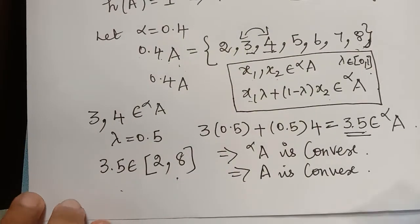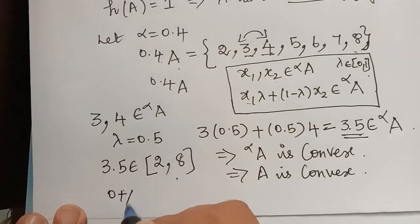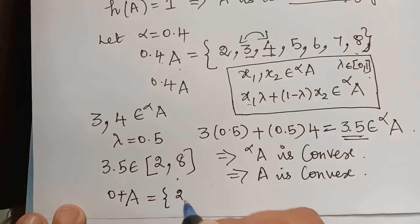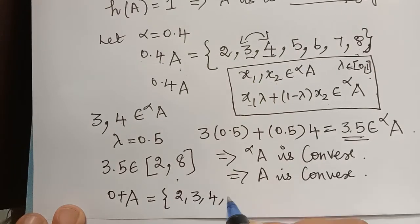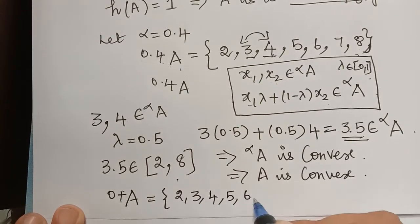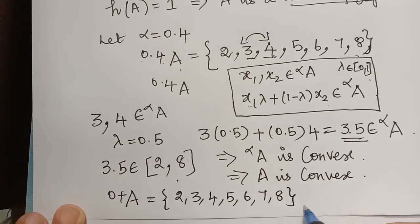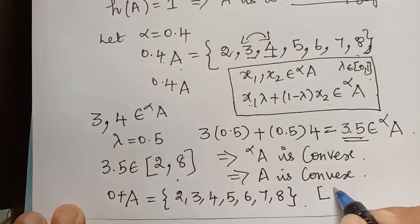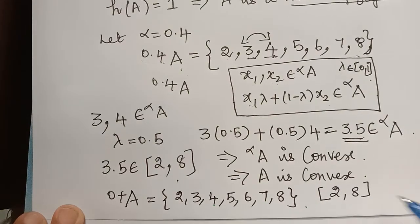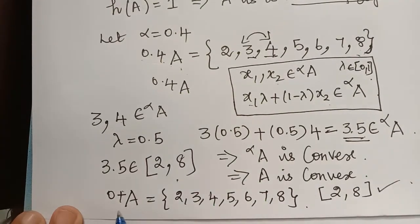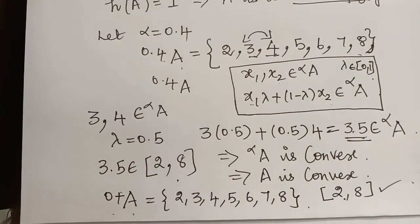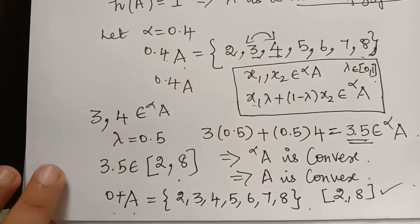The strong zero cut of A equals {2, 3, 4, 5, 6, 7, 8}. If you see, the values are bounded between 2 and 8. Therefore the support of A is bounded, and all three conditions are satisfied.